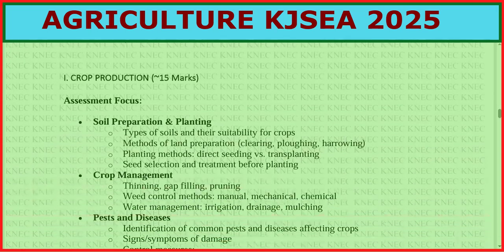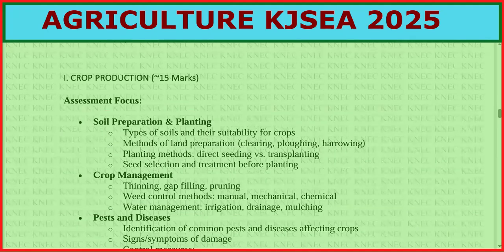In crop production, worth 15 marks, look at types of soil and their suitability for crops, then methods of land preparation — clearing, plowing, harrowing — and planting methods like direct seeding versus transplanting, and seed selection and treatment before planting.